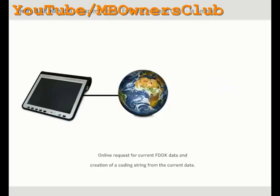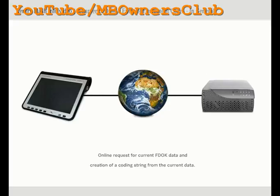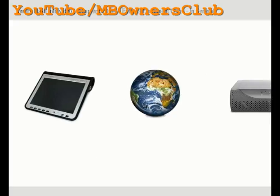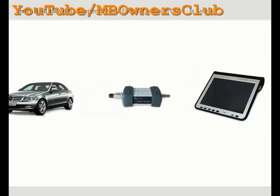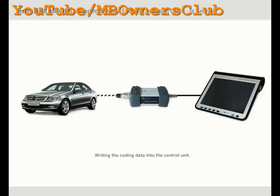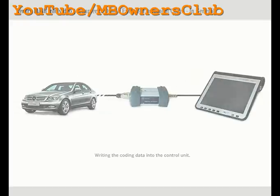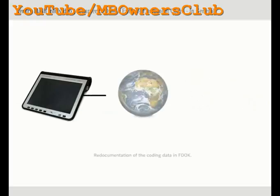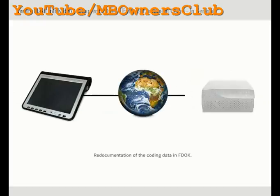SCN coding of the control unit in question is often necessary in order to activate a retrofit. This involves requesting SCN coding data online in the central systems and transmitting it into the control unit. The process ends with the re-documentation of the changes made into FDOC.